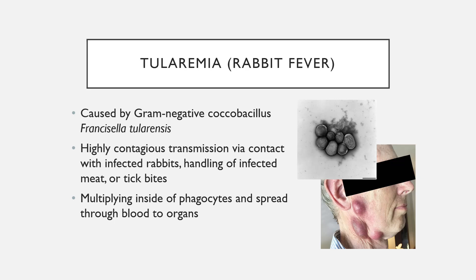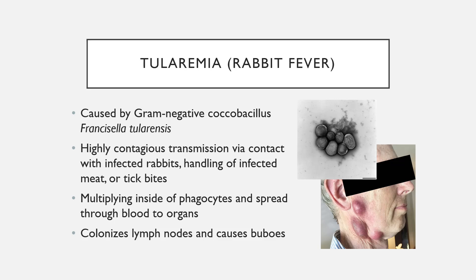Once it travels to the lymph nodes, Francisella tularensis colonizes them and results in buboes — highly swollen lymph nodes, as visible in images of severely swollen face and neck lymph nodes. Tularemia is also considered to have high potential as a biological warfare agent because inhalation of F. tularensis leads to a very severe, life-threatening infection with a 30–60% untreated mortality rate. Cells of F. tularensis must be handled in a biosafety level 3 lab.